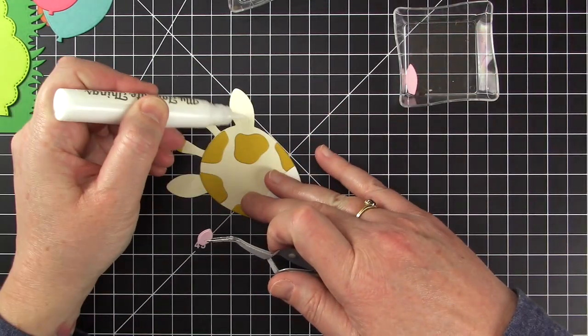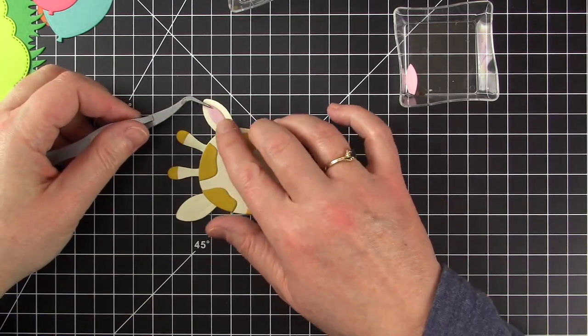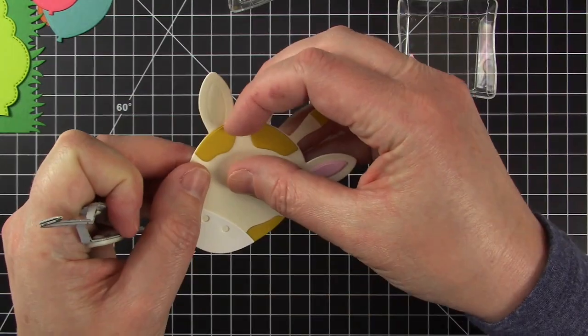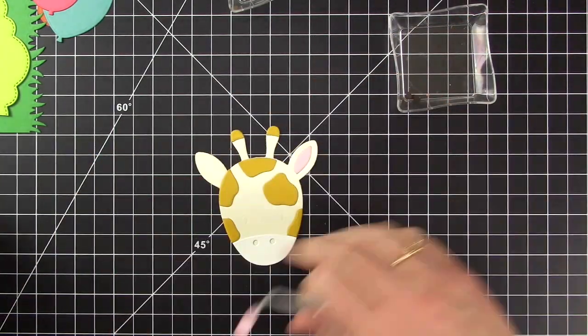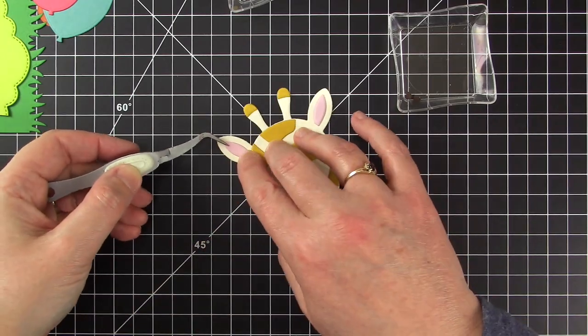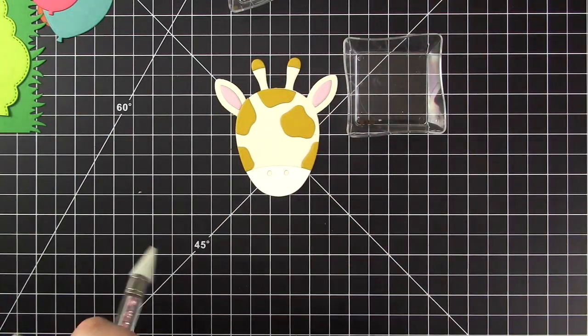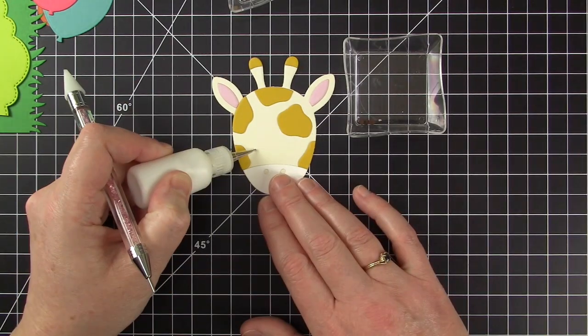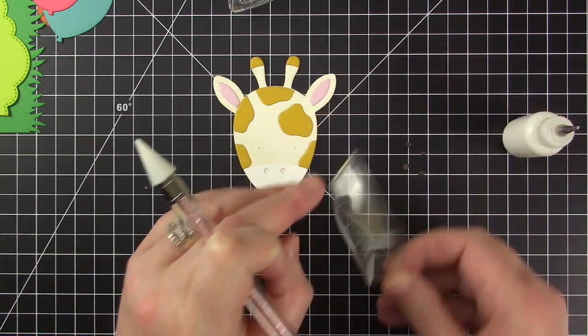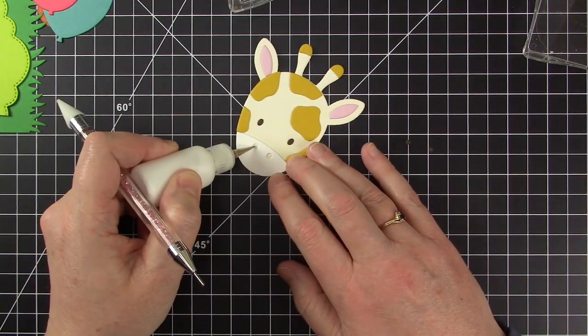Now getting back to this giraffe, I'm almost finished. I'm just adding the cotton candy inner ears and then the eyes and nostrils which I die cut from milk chocolate cardstock. I'm going to switch my glue right here to a needle point just because the eyes and nostrils are so tiny. I just needed a little tiny bit of glue.